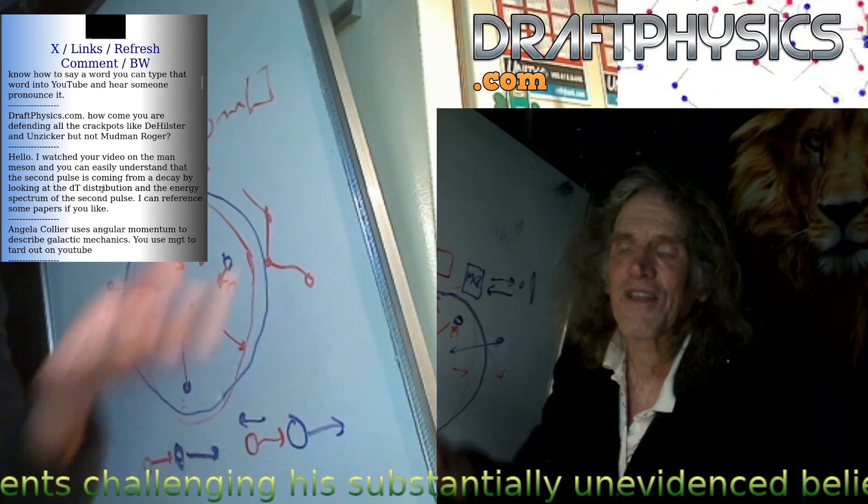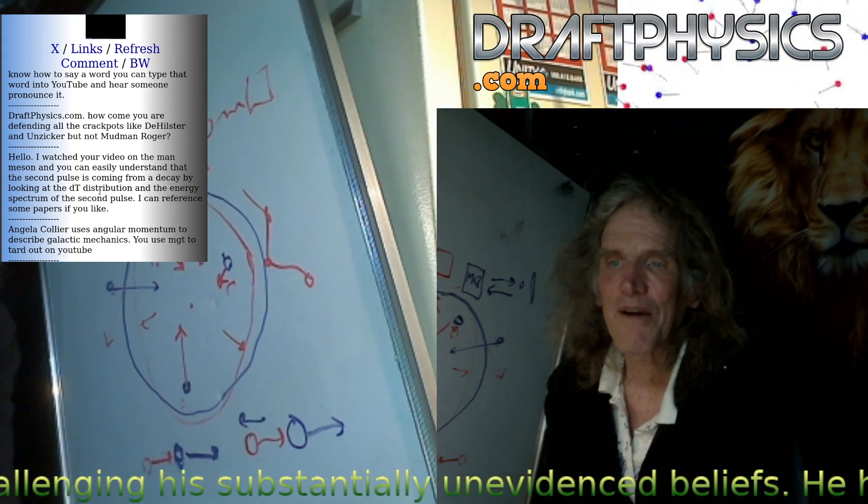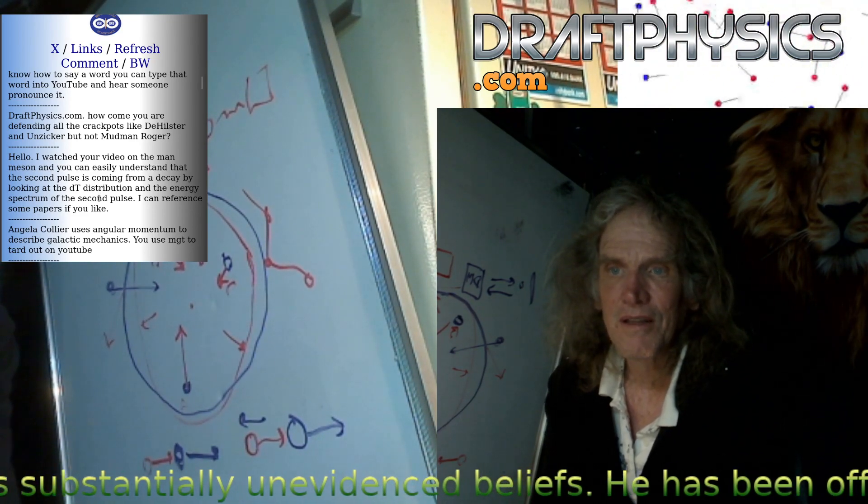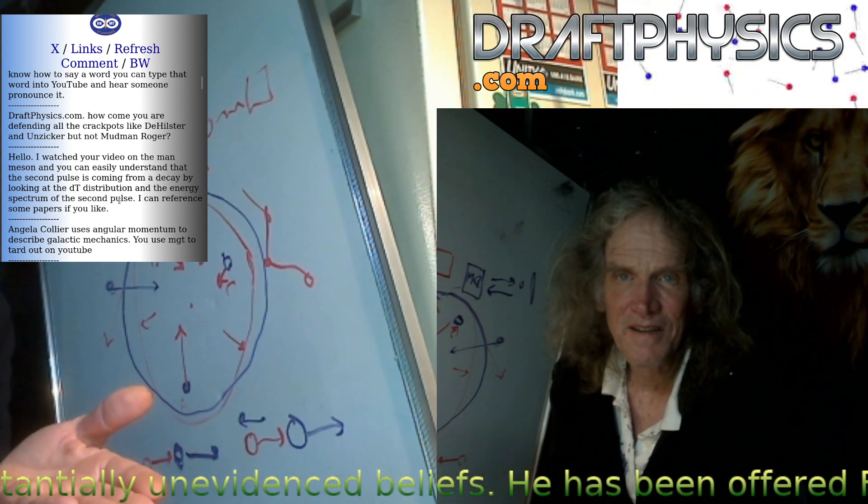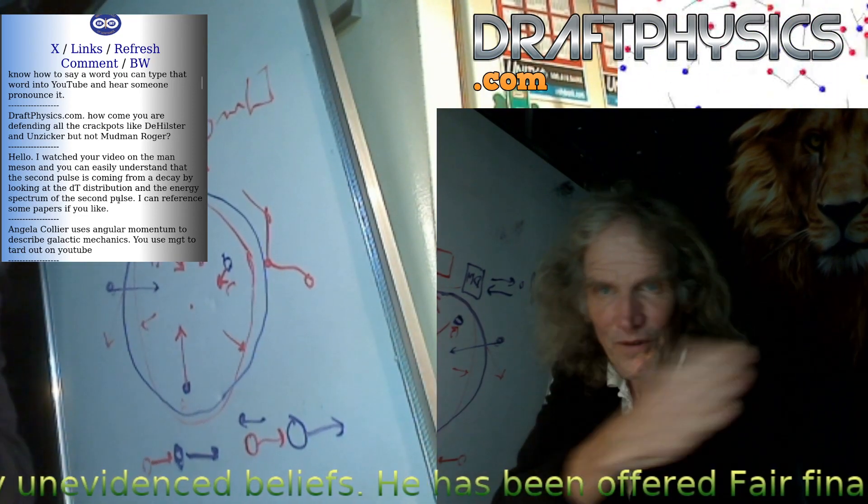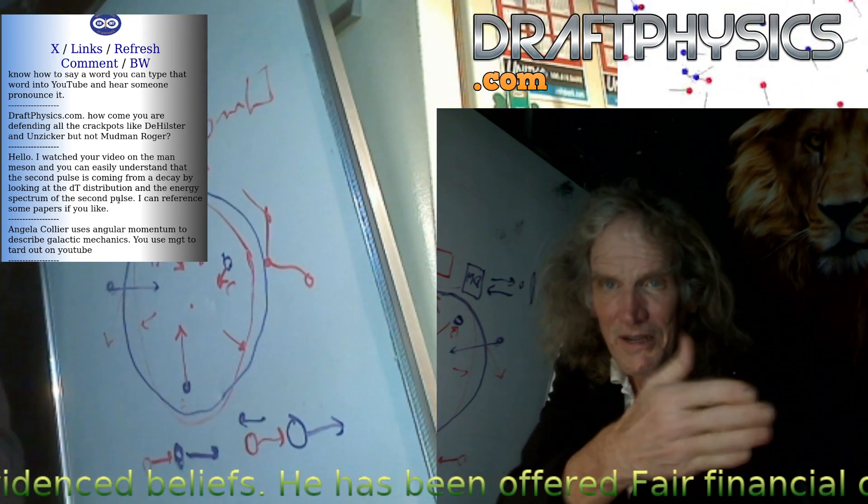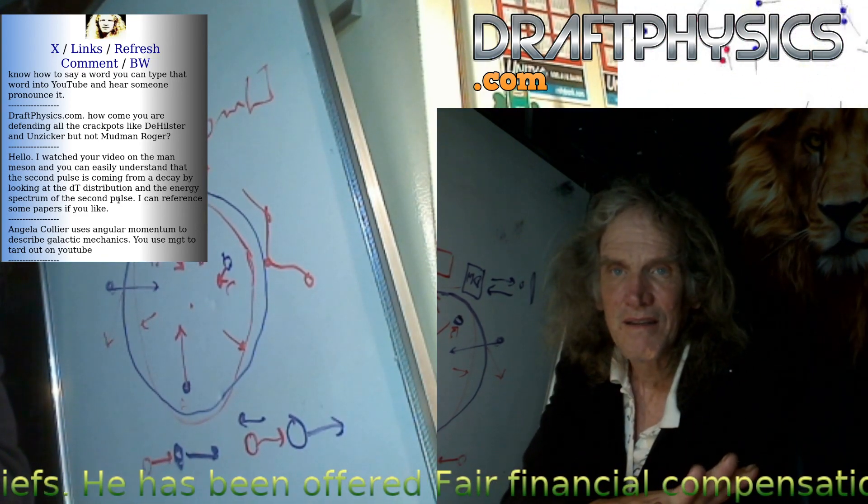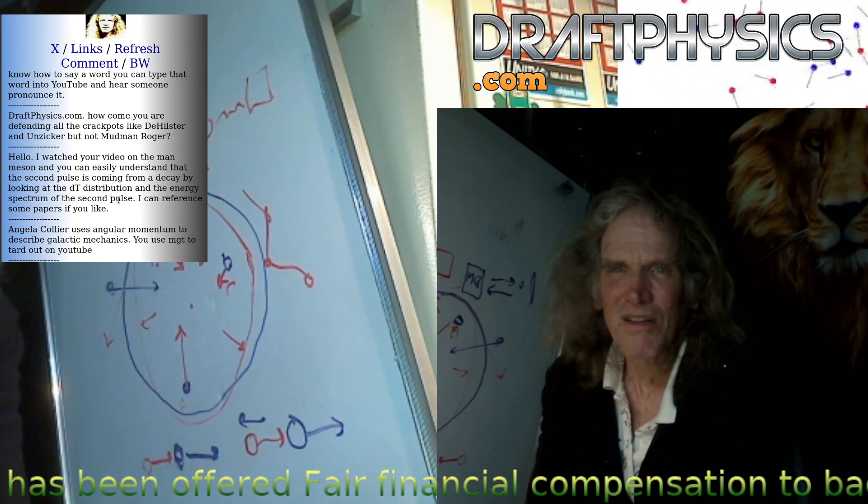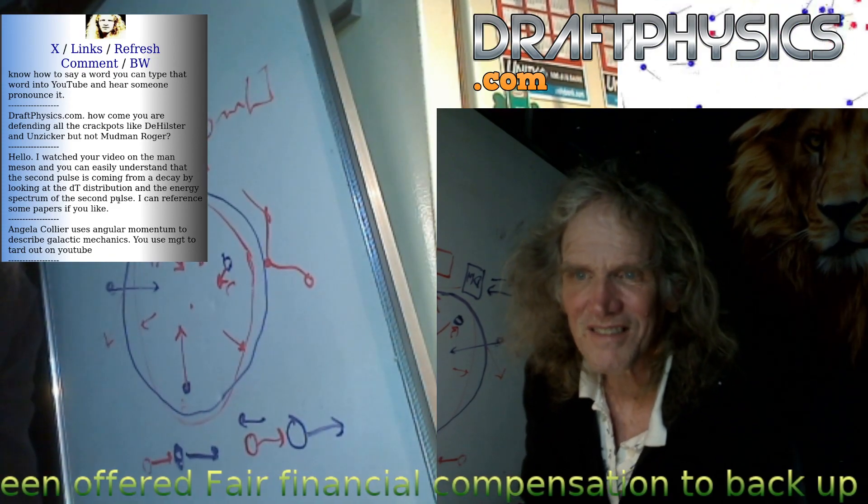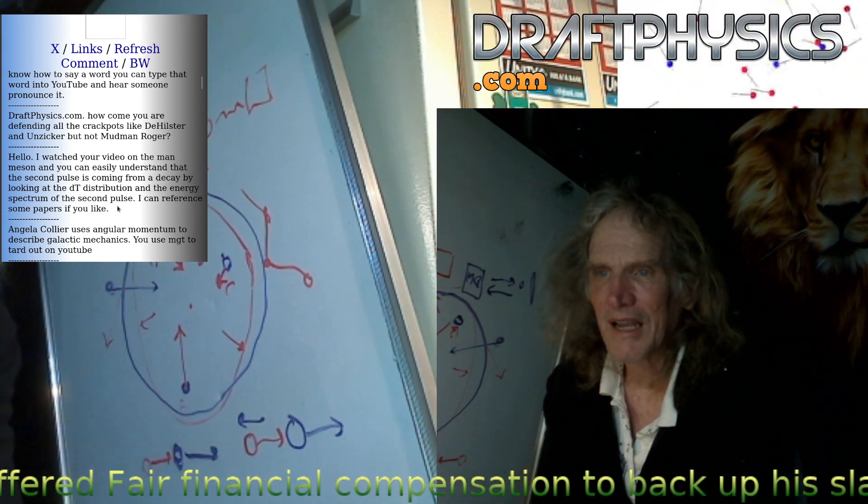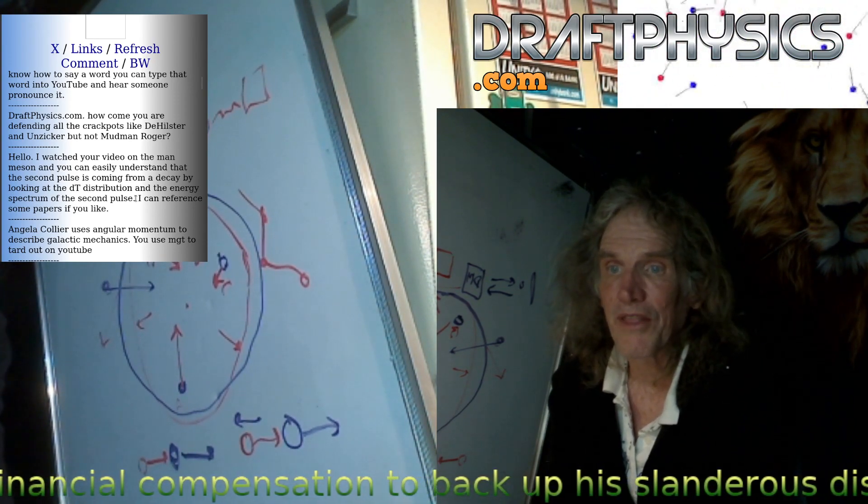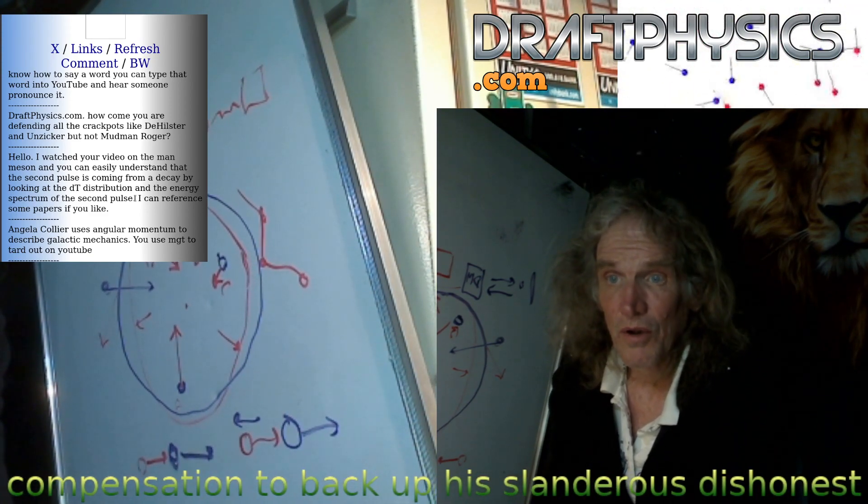Hello, I watched your video on the muon mason, mu mason, but fine. And you can easily understand that the second pulse is coming from a decay by looking at the DT distribution and the energy spectrum, but they didn't do any of that. They didn't even cite it in the TV presentation. They did a half-hour video on it. They didn't even talk about creating some kind of filter. And so again, you have to understand the filter isn't something the photodetector is producing as information. And they had no way to discern it as any information. The only thing they were doing was amplifying the magnitude of a visual photon. And that's it. There's no detectors involved in any way.